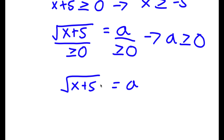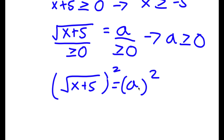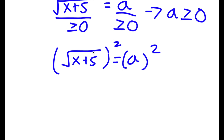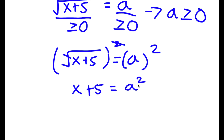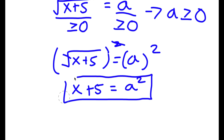Now what I'm first going to do is square both sides of the equation. So then these two would cancel out, and I would have x plus 5 is equal to a squared.